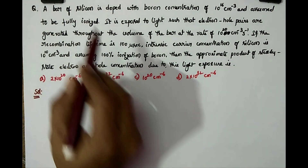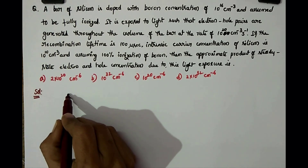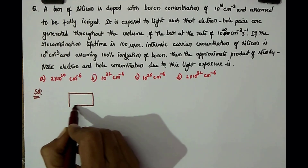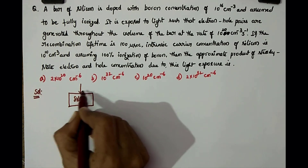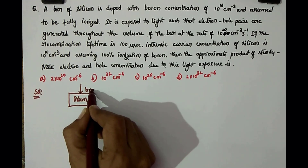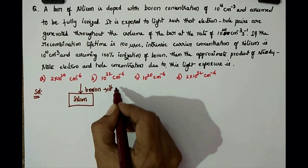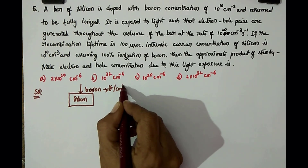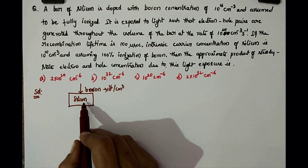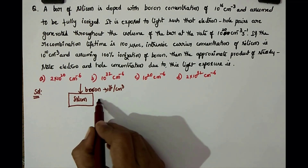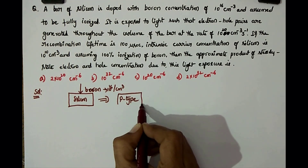Let me explain the problem clearly. Take a bar of silicon doped with boron concentration of 10 power 16 per centimeter cube. When you dope pure silicon with a boron-type impurity, it automatically results in a p-type bar. So now the semiconductor is p-type.